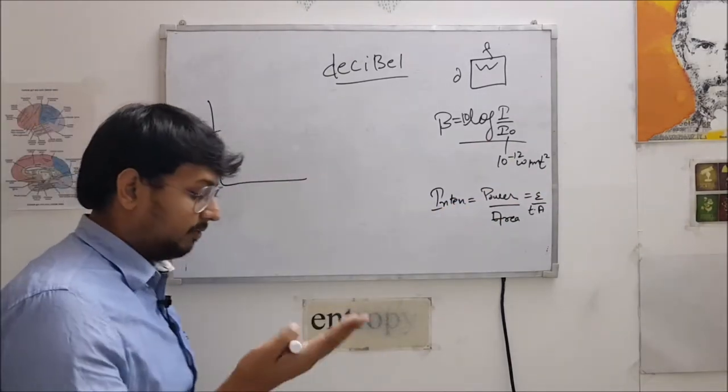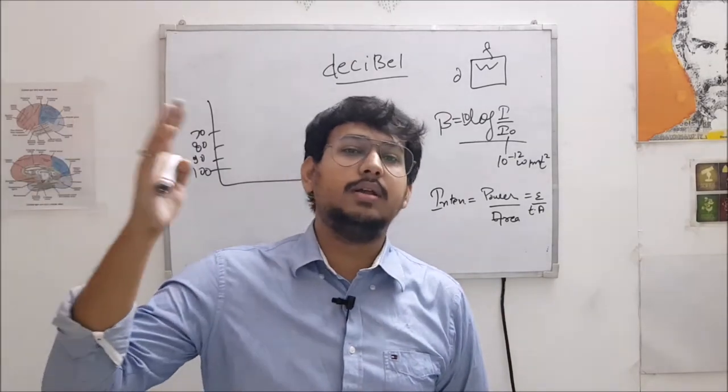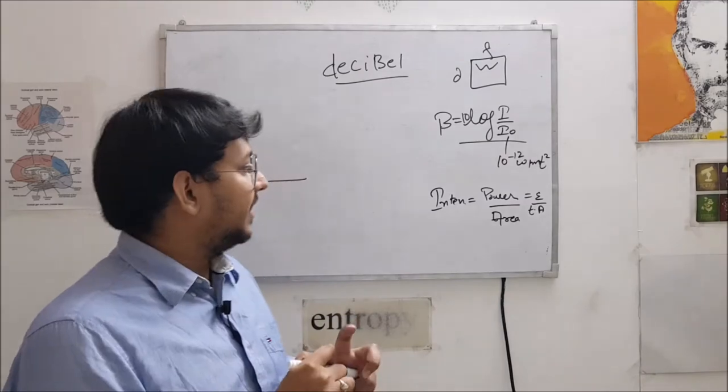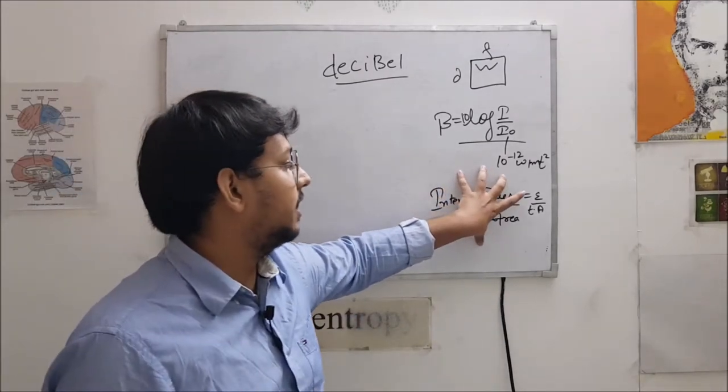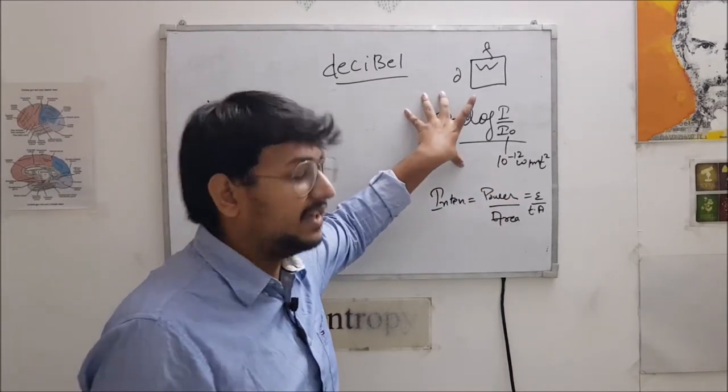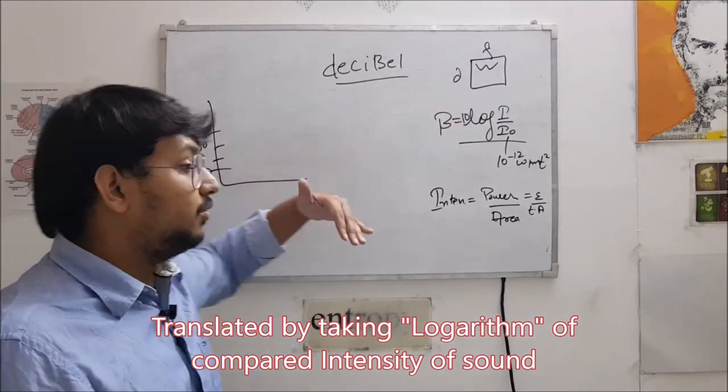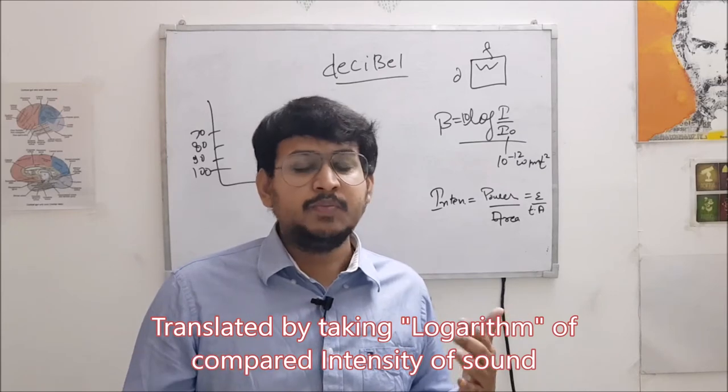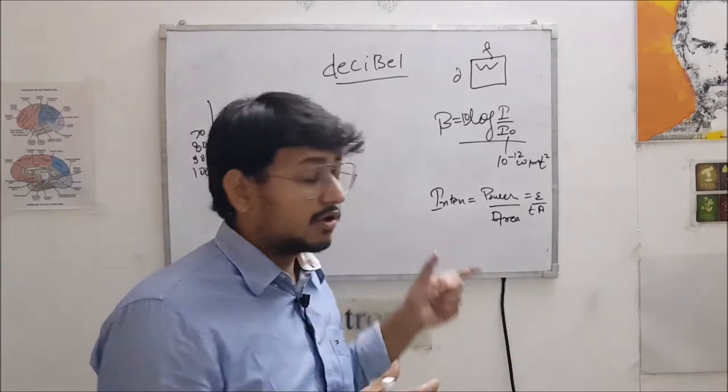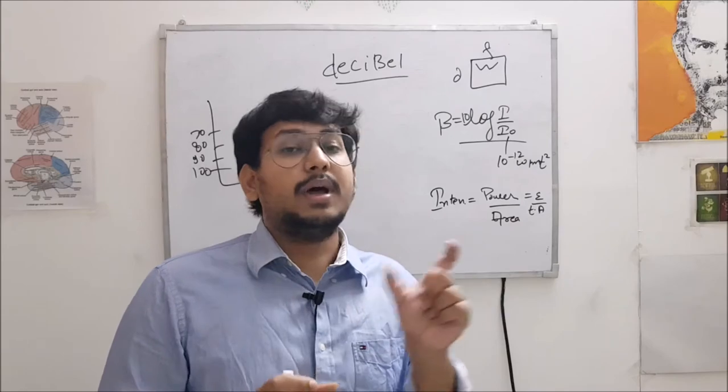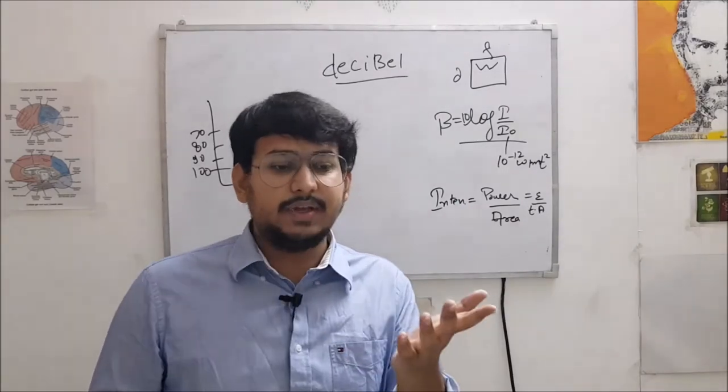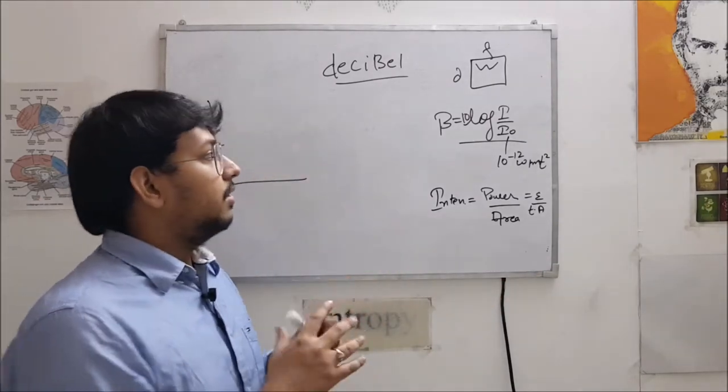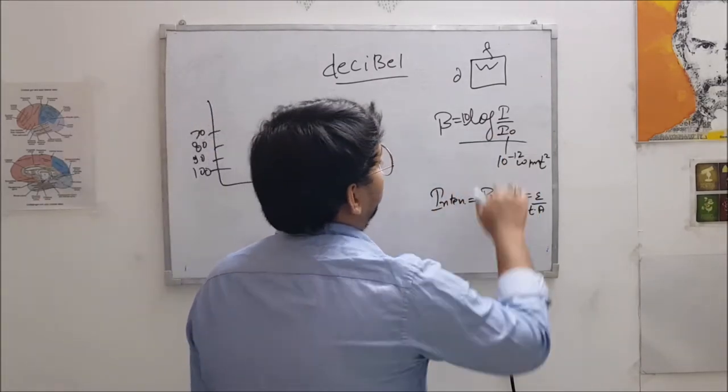So basically, we would have been writing 10 to the power 12, 13, minus 12, which is very bigger quantity, a mess. That is why this intensity was translated into this decibel scale so that we can easily convert into 100, 90, 80 or whatsoever which is in range. That is why it is less complicated numerical number which we can talk about. You do not have to say 10 to the power this or this. So this log helps us here.